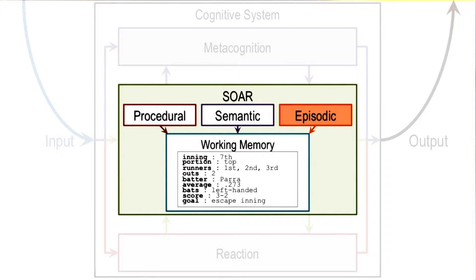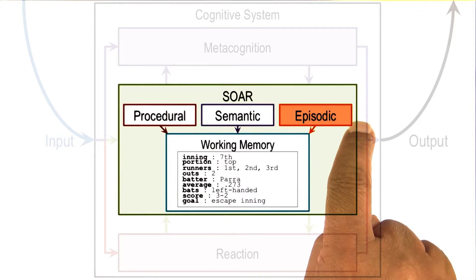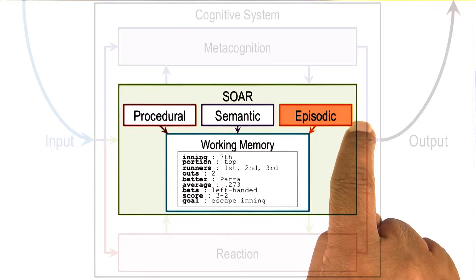At this point, Soar will attempt to learn a rule that might break the impasse. If the decision maker has a choice between a fast ball and a curve ball and cannot decide, might there be a way of learning a rule that decides what to throw in a particular situation? For this, Soar will invoke its episodic knowledge. Let's see how Soar does it, and how it can help Soar learn the rule that results in breaking the impasse.